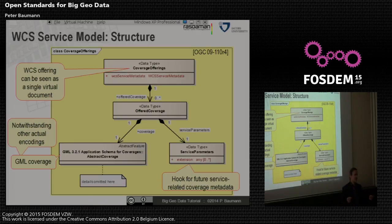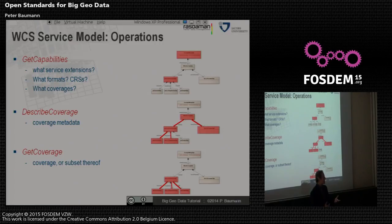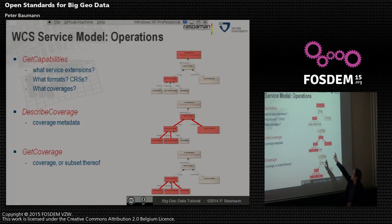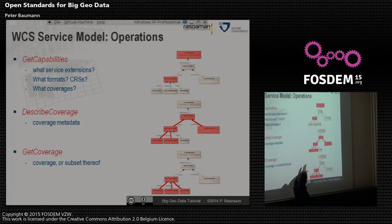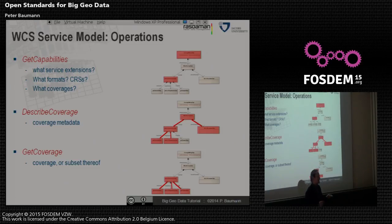We can use any encoding here, so we have something like one virtual document. The request types we fire against this conceptual model are: GetCapabilities — the standard canonical one — which says what service extensions, formats, and coordinate systems are supported, plus a list of all coverages. DescribeCoverage drills down into a particular coverage and gets its metadata — the coverage structure but without the pixels. And finally, GetCoverage is the workhorse: you get the coverage or a subset of it, drilling down to get exactly what you want.